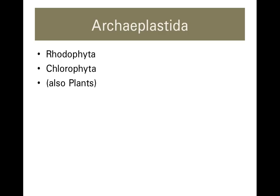That moves us on to our next clade of protists, which is comprised of all photosynthetic organisms: the Archaeplastida, the old plastid group. These are organisms thought to have branched very early on from other eukaryotes after engulfing a cyanobacterium as a photoendosymbiont. Other lineages that are photosynthetic — like euglena and the dinoflagellata — are thought to have consumed archaeplastids, so that's a secondary endosymbiosis, or a kind of cellular inception.